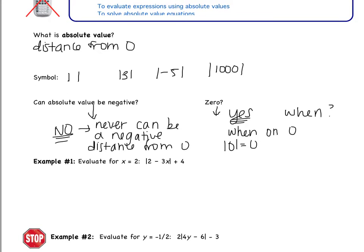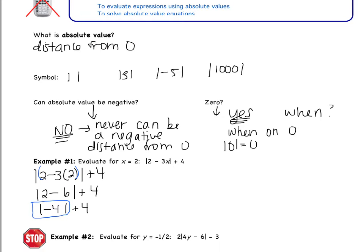So first, we're going to evaluate. Example 1: evaluate for x equals 2. Substitute that 2 in, giving 2 minus 3 times 2 plus 4. Absolute value works like parentheses, so do what's inside first. 3 times 2 is 6; 2 minus 6 is negative 4. Now take the absolute value: how far is negative 4 from 0? It's 4 units away. So the absolute value of negative 4 is 4, giving 4 plus 4, which equals 8.